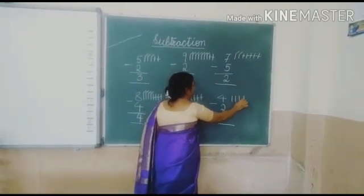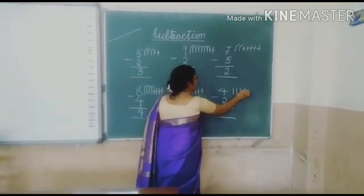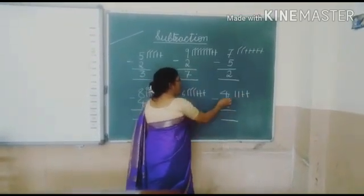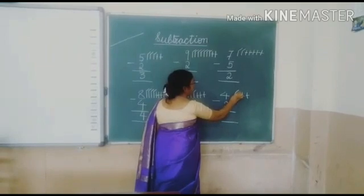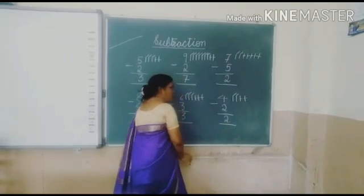This is 4. 1, 2, 3, 4. This is 2. Cut 2 lines. 1, 2. How many left? 1, 2. 4 minus 2 is equal to 2.